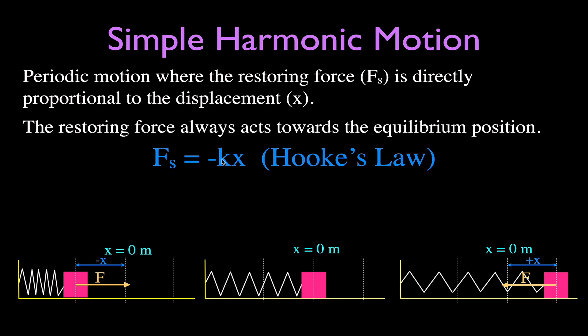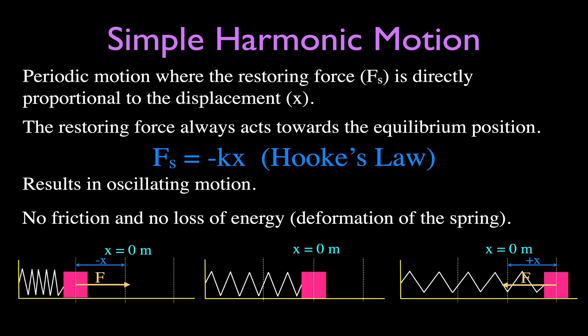I made another video discussing what the spring constant is — you can find that in the upper right-hand corner. That is Hooke's Law. This results in oscillating motion, meaning this mass, if we extend the spring and release it, is going to move back and forth continuously. We often say there is no friction between the mass and the surface, and no loss of energy due to deformation of the spring.